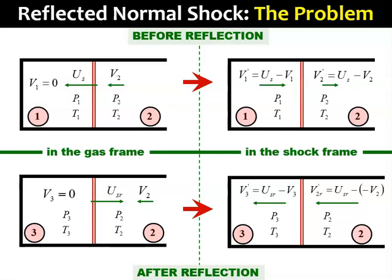V2r prime is not the same as v2 prime because the new shock speed u sub sr is not the same with the shock speed before the reflection u sub s. V3 prime turns out to be identical to u sub sr because v3 is zero. So, now we have set up our problem as a stationary shock problem. We should be able to solve this problem in its new setup using what we've learned previously.